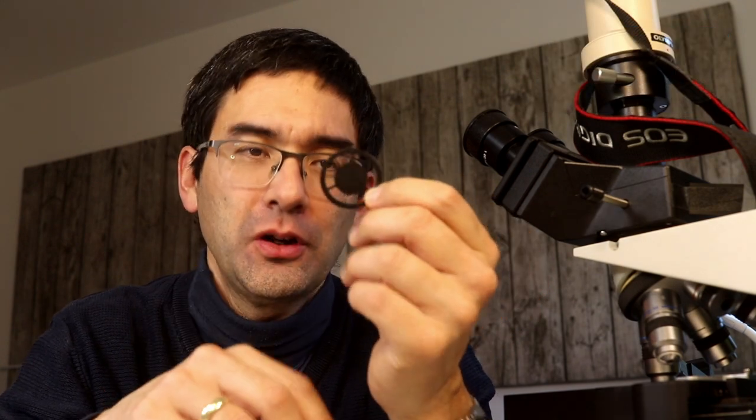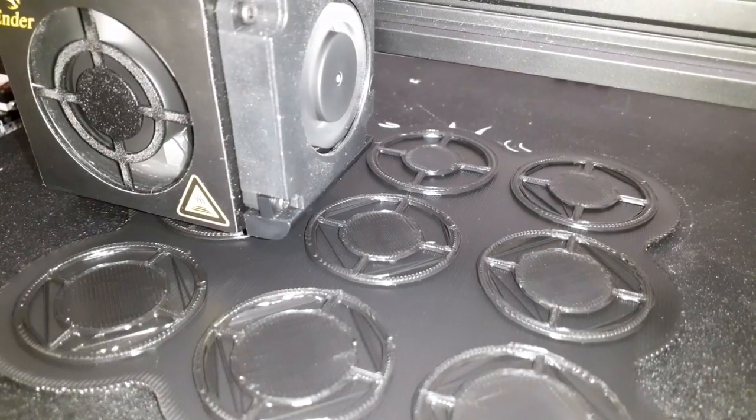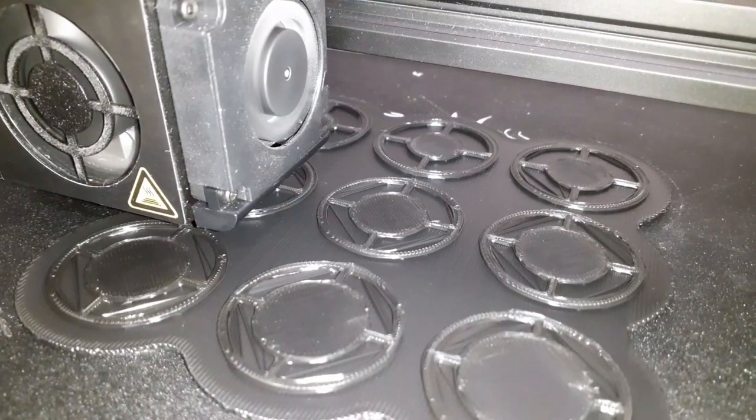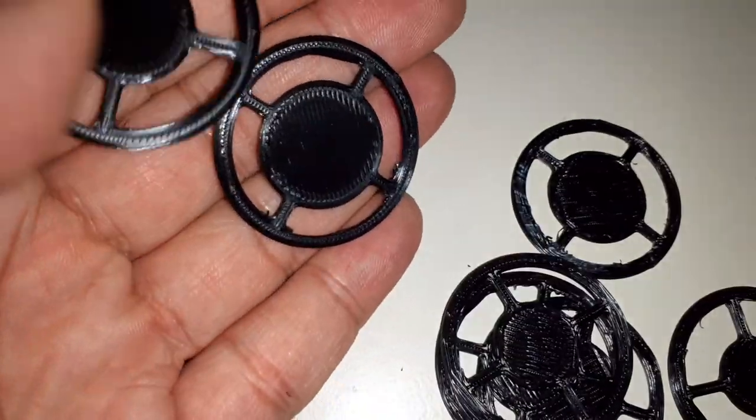Hi Microbe Hunter here. This here is a dark field patch stop filter for microscope and today I want to optimize this filter. I'm going to be using some 3D printing to try out different sizes and dimensions to find the optimum one.